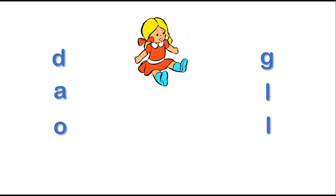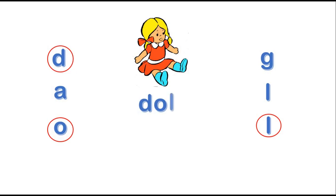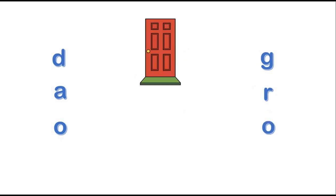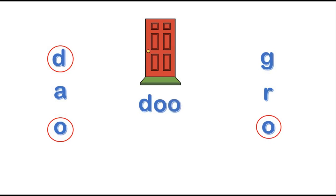Look at this picture. What's this? It's a doll. What is the first letter? D, D, O, O, L, L. Let's read the word together. Doll. Look at this one. D, O, O, R. Let's read the word door. Door. It's a door.